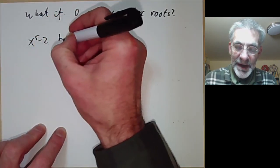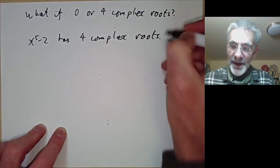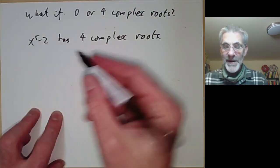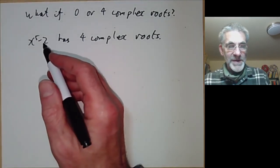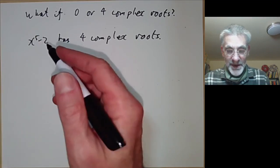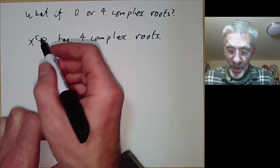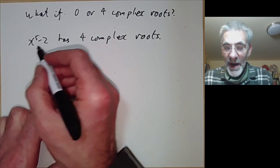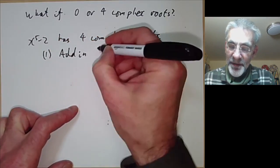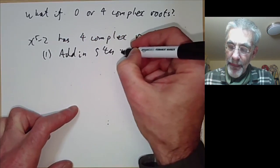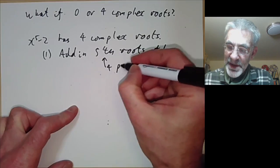For example, x to the 5 minus 2 has four complex roots, it's irreducible, and it's obviously solvable by radicals. We can take a quick look at what goes on, because this will be an example of what we're going to do later. To find the splitting field we do it in two steps: first, we add in the fifth roots of 1.